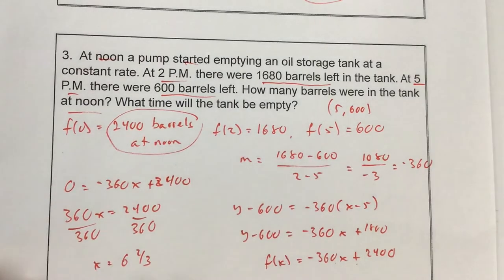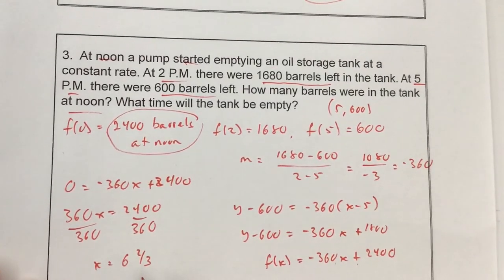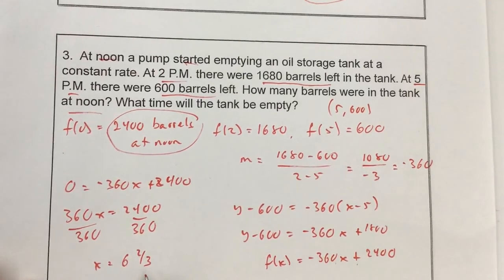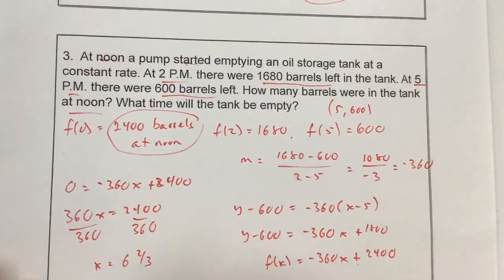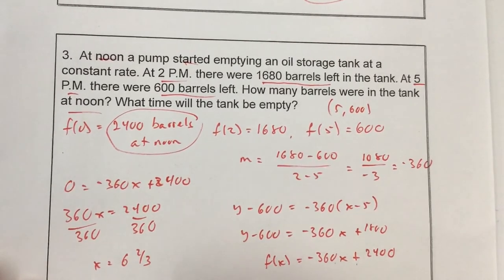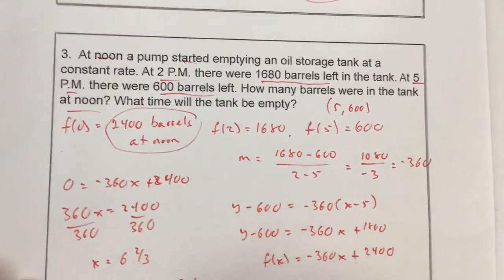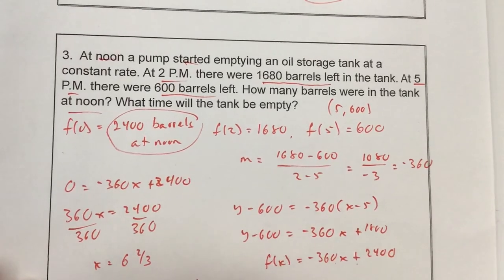Let's see, 2/3 of an hour is 40 minutes, because 40 out of 60 is the same. So starting at noon, it would be at 6:40 p.m. Empty at.